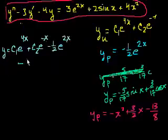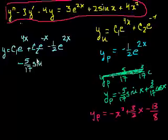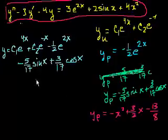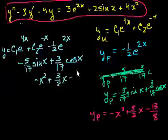And I'll continue this line, minus 5 over 17, sine of x, plus 3 over 17, cosine of x, minus x squared, plus 3 halves x, minus 13 over 8.